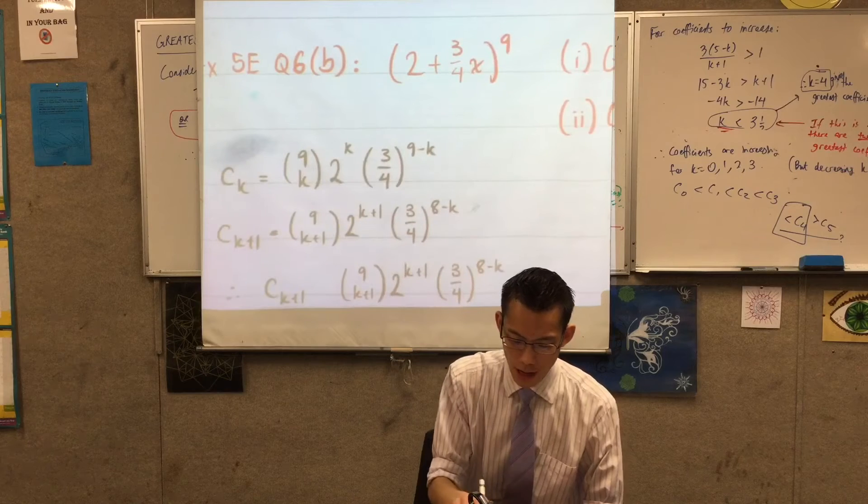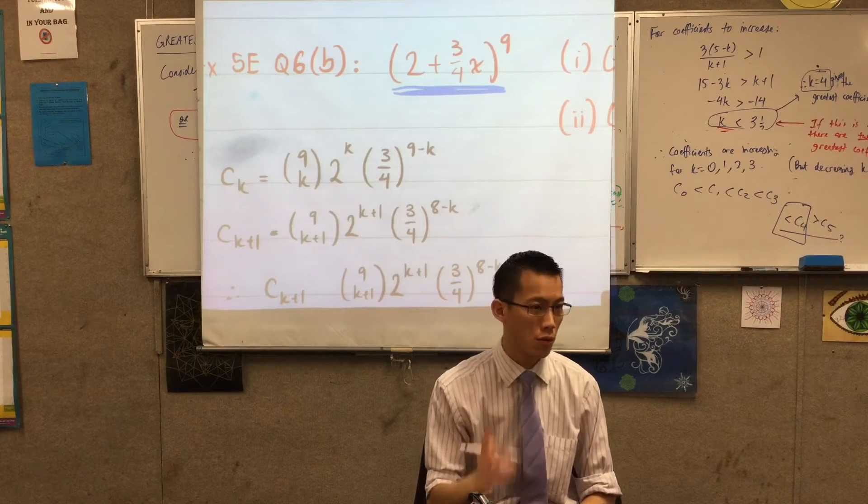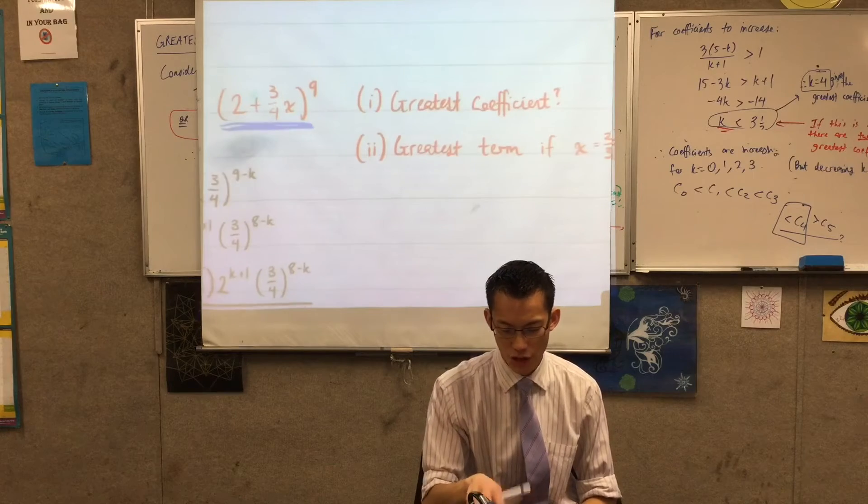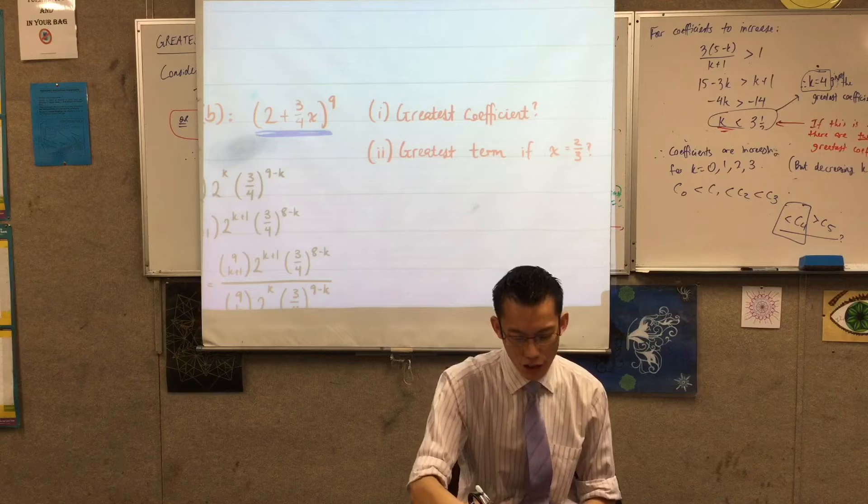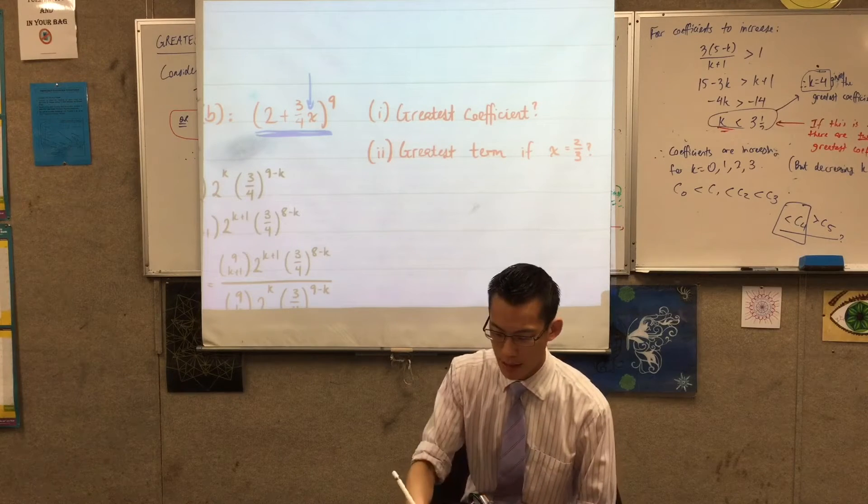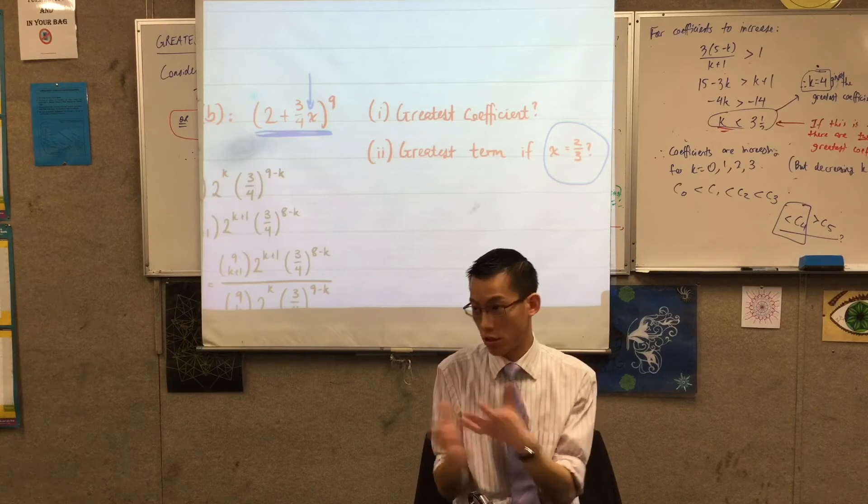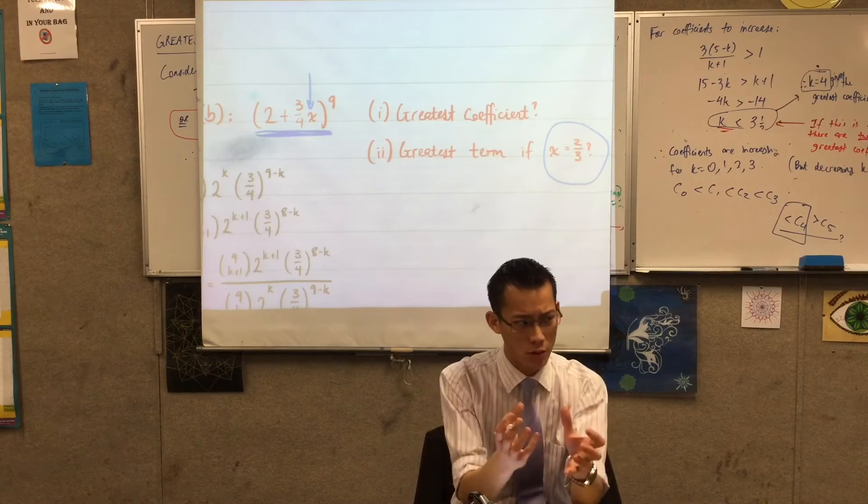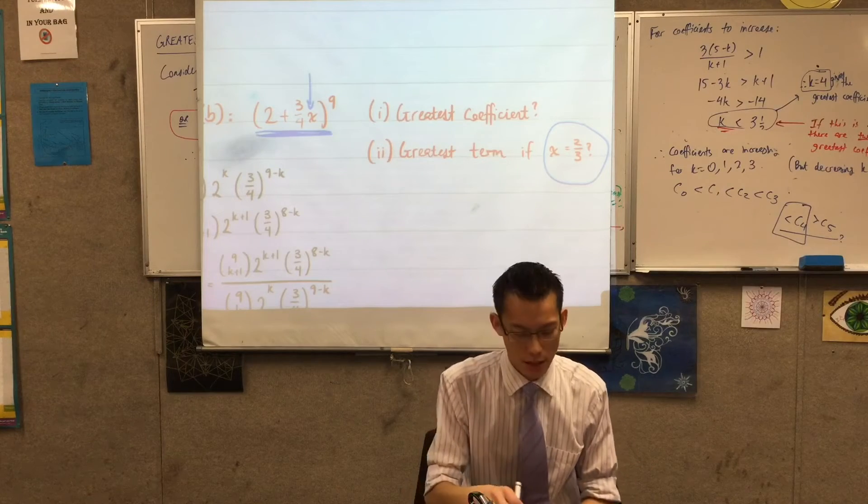They give you this binomial expansion and then they ask two questions. They say okay, well standard question, what's the greatest coefficient? But then secondly, what if I actually know what x is? What if we designate a particular value like say two-thirds, then I can actually know not just the greatest coefficient but the greatest term, the whole thing once it's all come together and simplified. So what is the greatest term?